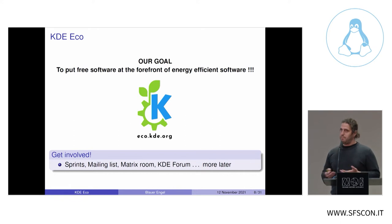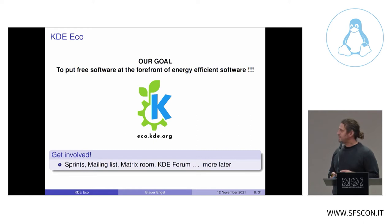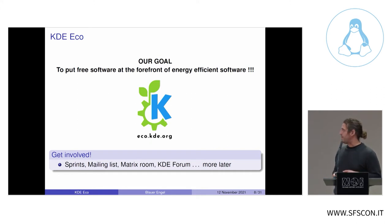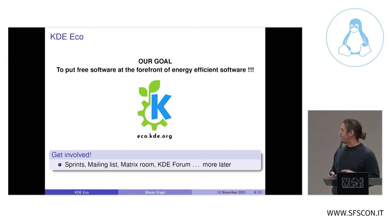We have many channels to get involved. We're going to have two sprints coming up in the next few months — one in December to set up our community lab, and one in early January/February 2022 to start measuring free software. We have a mailing list and a matrix room for conversations about energy efficient software, a forum channel, and I will present a full list of ways to contact us at the end.